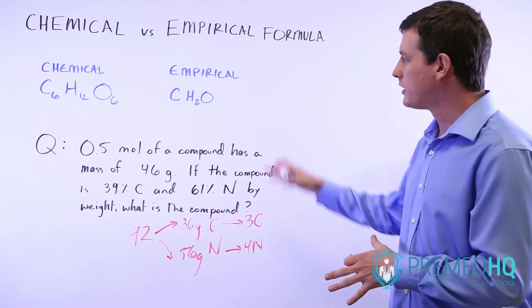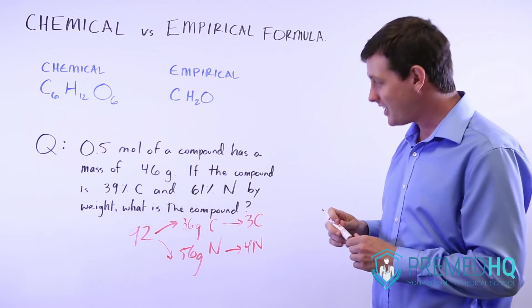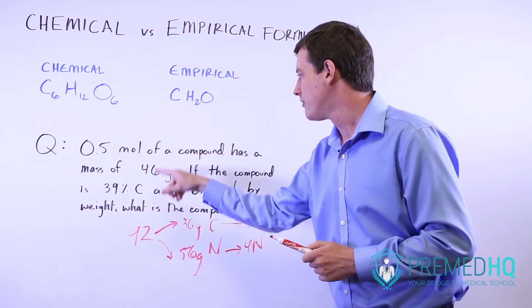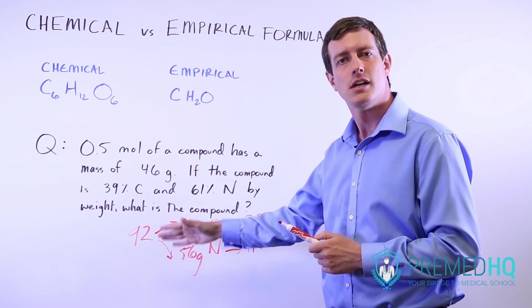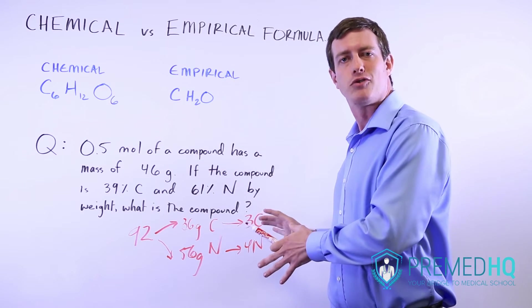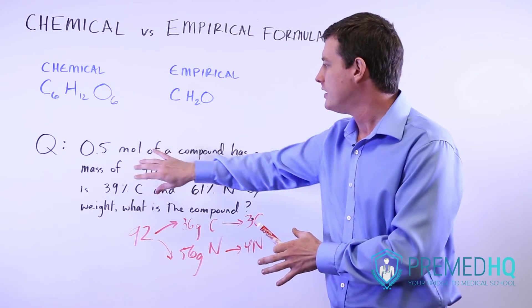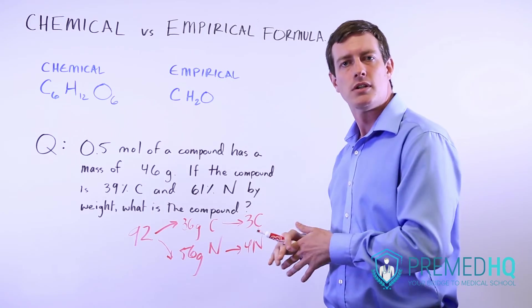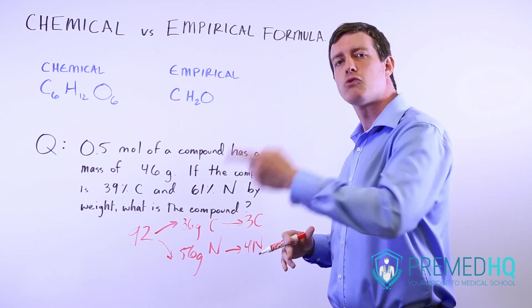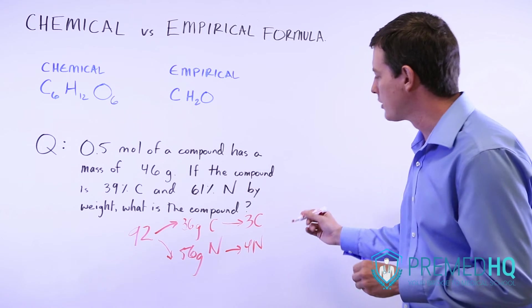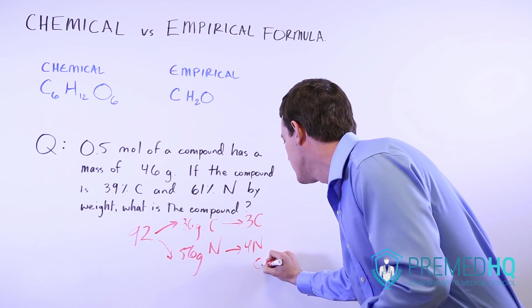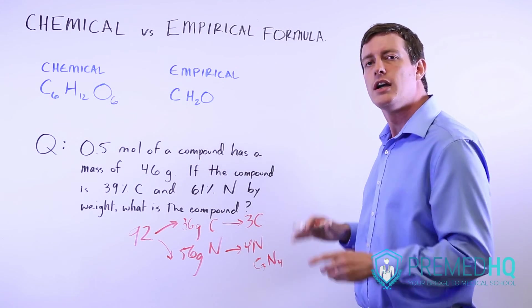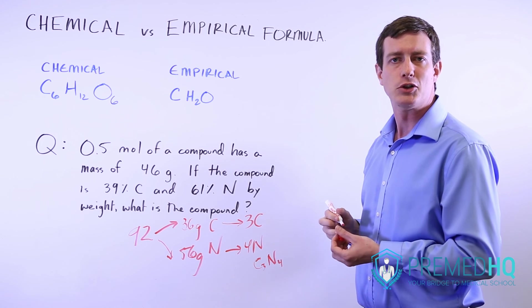This is true that it is the empirical formula, but because we know the actual mass of the compound - an entire mole is 92 grams - we can deduce the exact chemical formula as well. If you find the grams per mole and that's given to you, you can go straight to the chemical formula. Our chemical formula is C3N4. That is the exact compound we're looking for, not just the empirical formula but also the chemical formula.